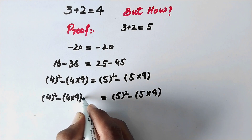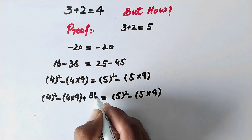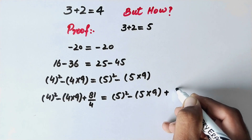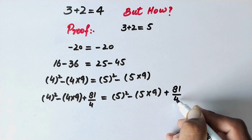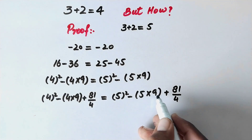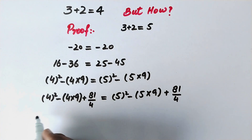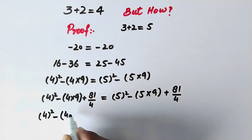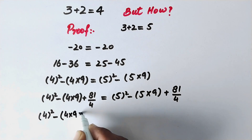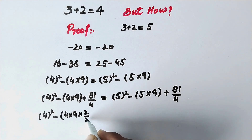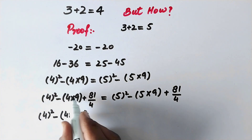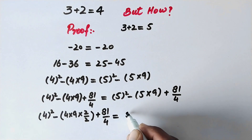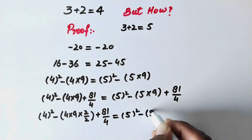And now, what we will do next is we will add 81 over 4 to both sides of the equation. It is a mathematics rule — we have to add the same thing on both sides of an equation to balance it. So in the next step, we write 4 squared minus 4 multiplied by 9, plus 81 over 4, is equal to 5 squared minus 5 multiplied by 9, plus 81 over 4.